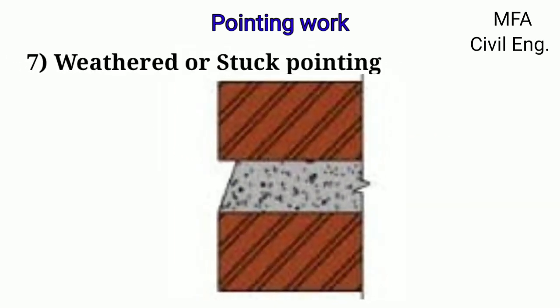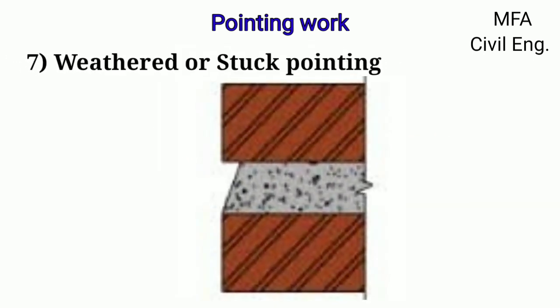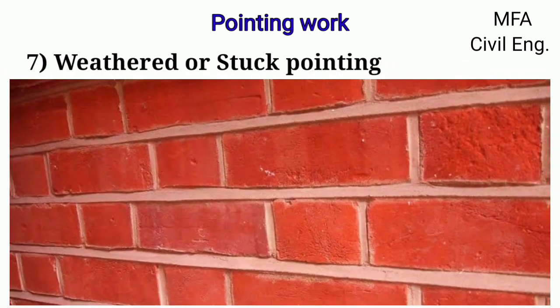In weathered or stuck type of pointing, the face of pointing is not kept vertical but is kept inclined. The upper edge of the pointing plaster is pressed inside the masonry by about 10 mm and the lower edge is finished level with the face of the masonry. This type of pointing is mostly used for brickwork, particularly for finishing horizontal joints.